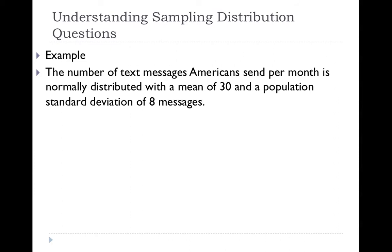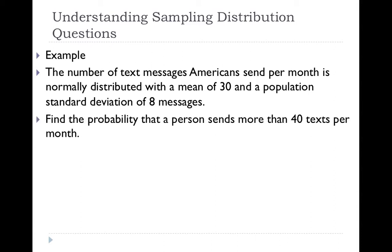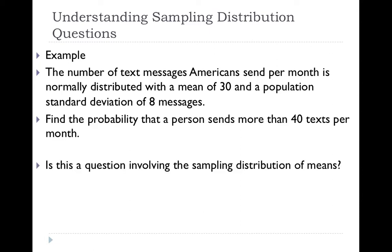The number of text messages Americans send per month is normally distributed with a mean of 30 and a population standard deviation of 8 messages. Find the probability that a person sends more than 40 texts per month. The question is: does this involve the sampling distribution of means? Are we going to use the methods from chapter 8?